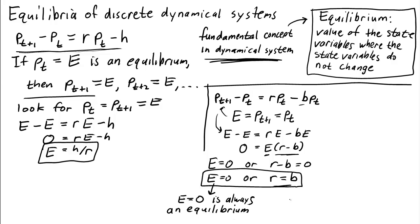What about this other equation? What does this mean? If it happens to be that the parameters are chosen so that r equals b, then any value of e is an equilibrium.